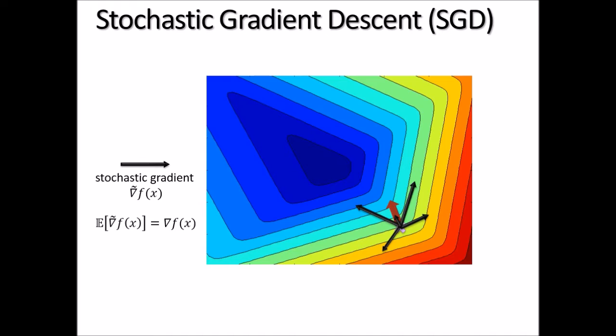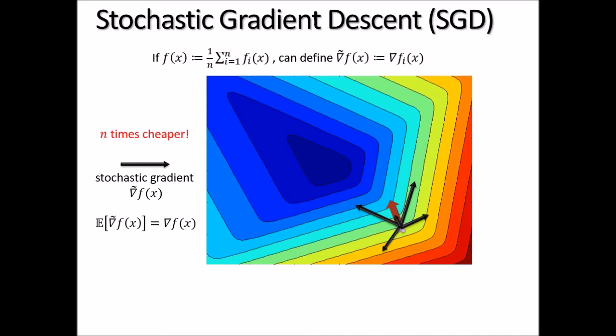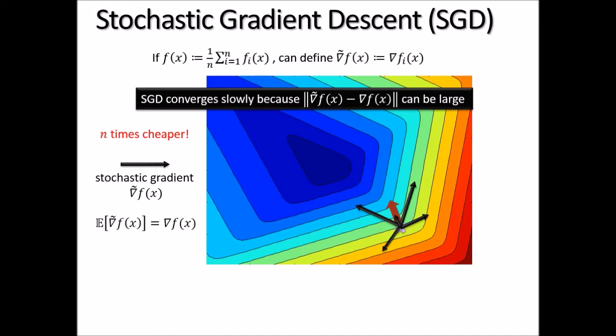Actual stochastic settings arise when the function is of the finite sum form — a finite average of the fi's. In such a case, the stochastic gradient is just the gradient of one randomly chosen fi, and the method is known as SGD, stochastic gradient descent. SGD is famously known for its slow convergence. Although each iteration is n times cheaper than the full gradient, SGD converges slowly because the variance of the stochastic gradient is very large.